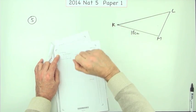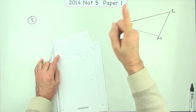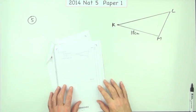Number 5 from paper 1, the first paper, the non-calculator paper of the 2014 National 5.